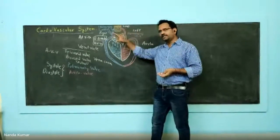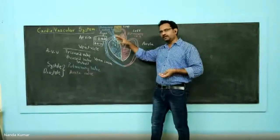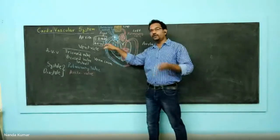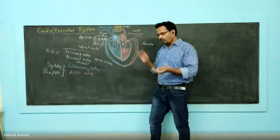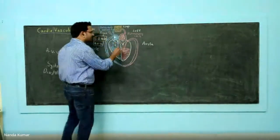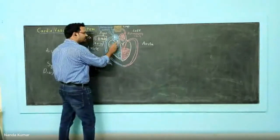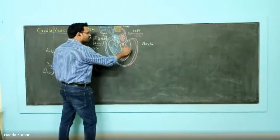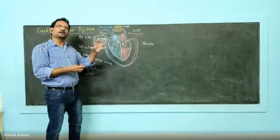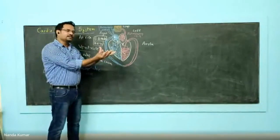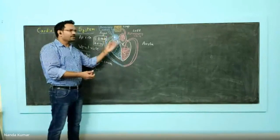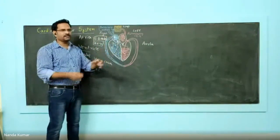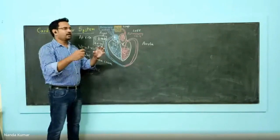The SA node initiates the signal, and because of that, the signal is carried to the AV node — the atrioventricular node. Once the AV node gets the signal, it is propagated to the entire ventricles. Both ventricles will get that signal and contract simultaneously, with the help of Purkinje fibers, carrying out the impulses.